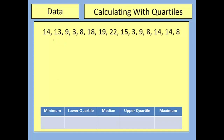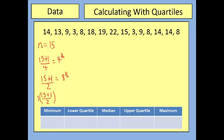Let's look at a different example using those formulas. This time we have 15 bits of data, so N=15. For the lower quartile: (15+1)/4 = 16/4 = 4, so we want the 4th bit of data. For the median: (15+1)/2 = 16/2 = 8, so we want the 8th bit of data. For the upper quartile: 3×(15+1)/4 = 3×4 = 12, so we want the 12th bit of data.